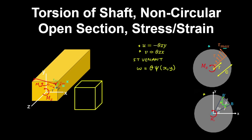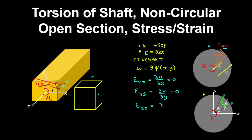From the displacements, we can obtain the strains. Noting that this is an element cut from the shaft to expose internal stresses: the strain on the face with normal in the X direction, acting in the X direction, equals the partial derivative of the horizontal displacement U with respect to X — since U does not depend on X, that is zero. Similarly, the axial strain in the Y direction is the partial derivative of V with respect to Y — since V does not depend on Y, that is also zero. The strain in the Z direction is the partial derivative of the warping displacement W with respect to Z — since the rate of twist and the warping function do not depend on Z, that is also zero.